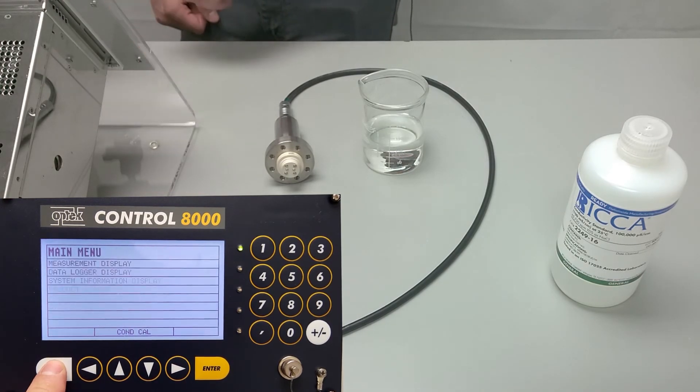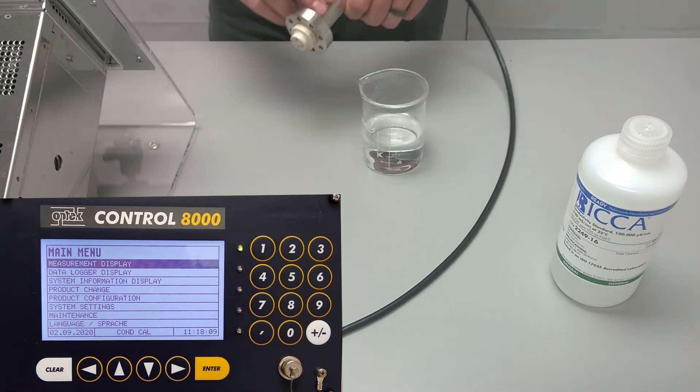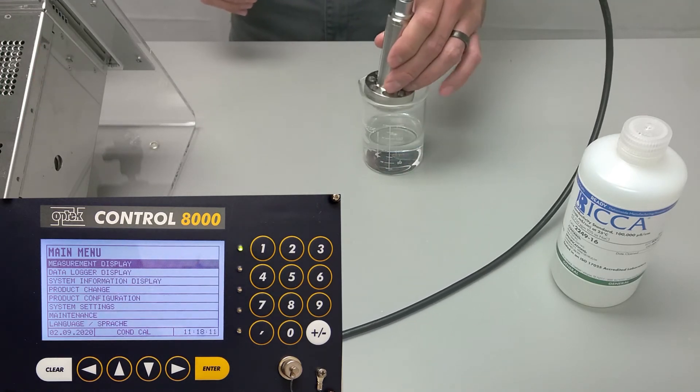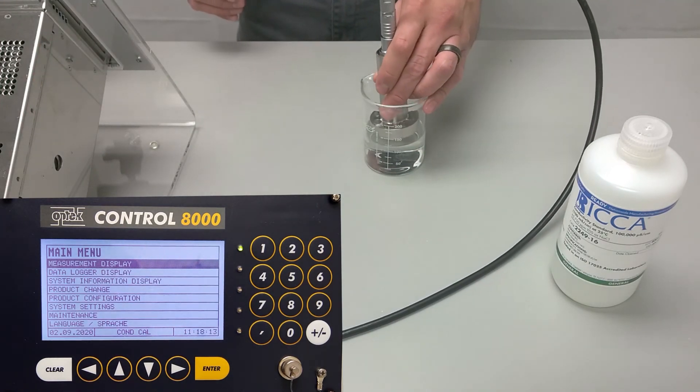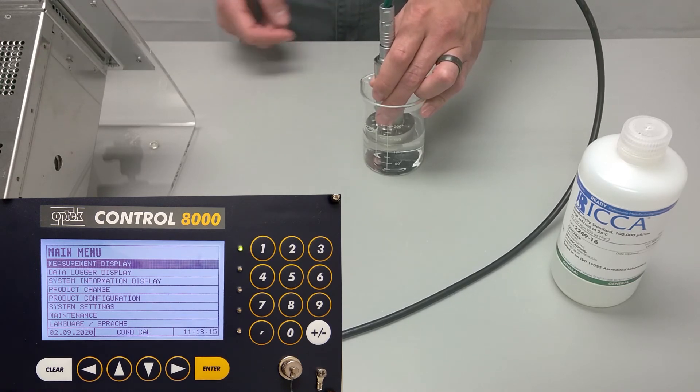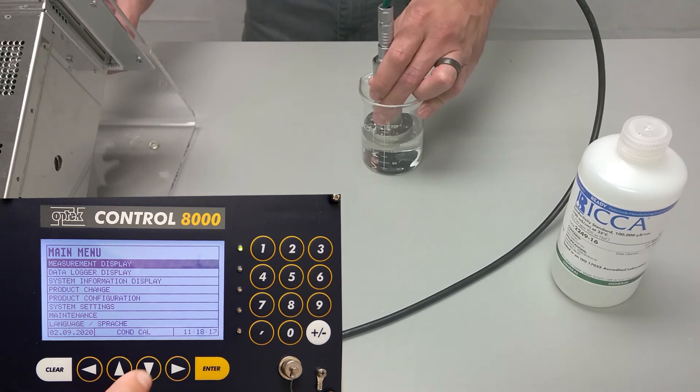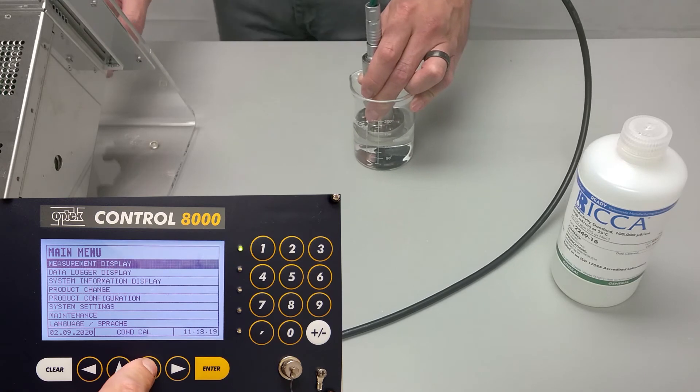Press clear to get back to that main menu, and now we'll start the calibration portion. We'll introduce our conductivity sensor to our solution and ensure that we have at least an inch of space between the bottom of the beaker and the probe so that we don't have any wall effects.